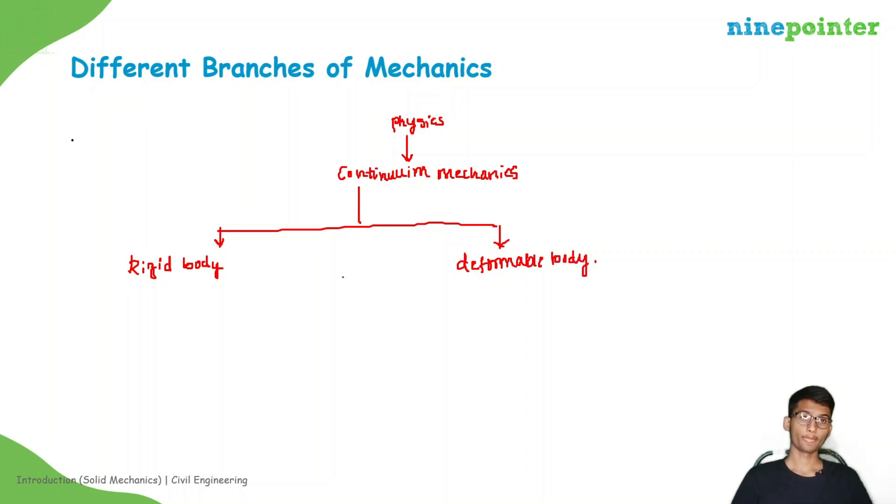What is rigid body? In a rigid body, if you consider any two particles, the distance between the two particles will remain same before and after application of the load. This implies that on application of the load, the rigid body does not undergo any change in shape or size.